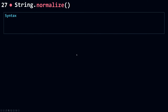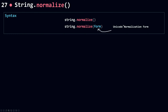Let's talk about the syntax. You call normalize on your string, and normalize doesn't change the original string — it returns a new string with the normalization applied. You can pass in some arguments. If none are passed, the parameter called the Unicode Normalization Form defaults to NFC, which stands for canonical decomposition followed by canonical composition. You can also use NFD, which stands for canonical decomposition.